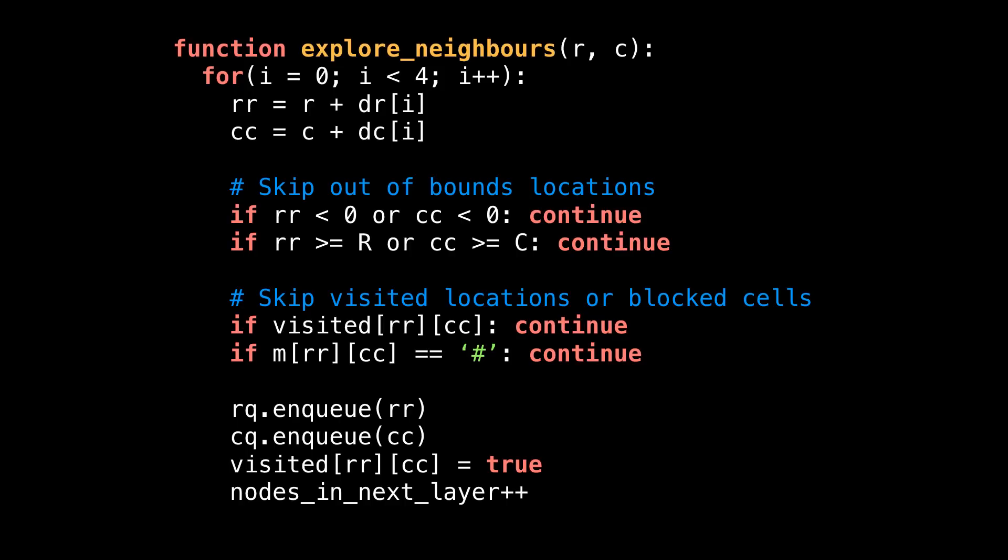Here we are inside the explore_neighbors method. This is where we'll be using the direction vector technique we learned about earlier. Since cells have four directions we care about—north, south, east, and west—I loop i from zero to four non-inclusive. Compute the new coordinate rr, cc by adding the direction vector to the current position.